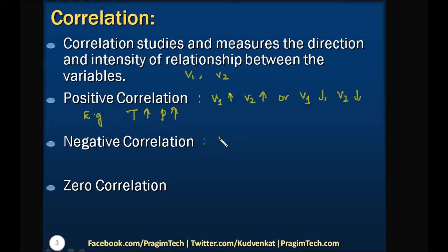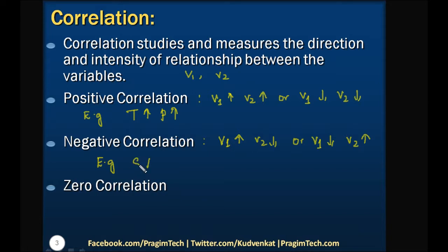Negative correlation means increase in one variable causes decrease in another variable, or decrease in one variable results in increase in another variable. For example, the more speed you drive the car, the less time it takes to reach the destination. Speed increase results in time decrement. If you go slowly, that is decrease in speed results in increase in time to reach the destination. So we can say that speed and time are negatively correlated.